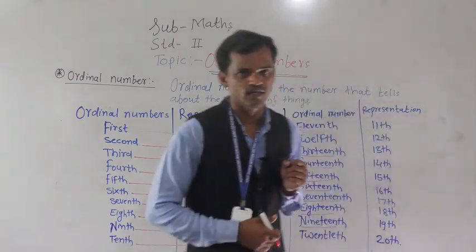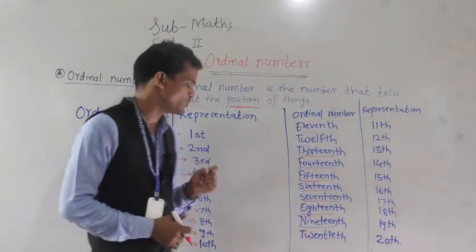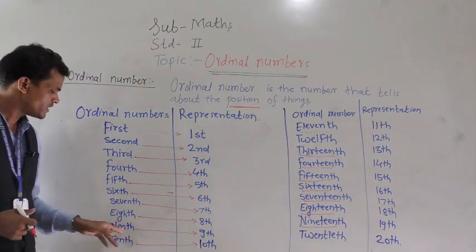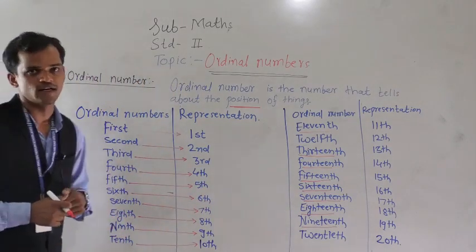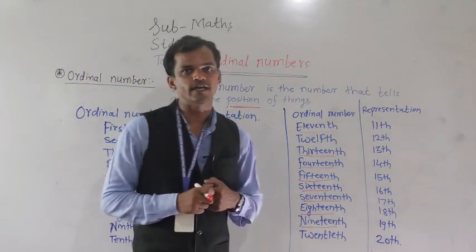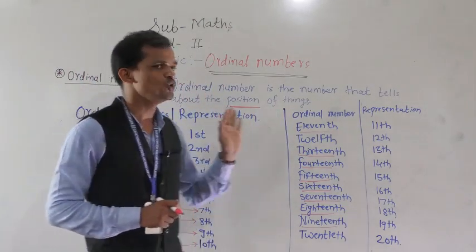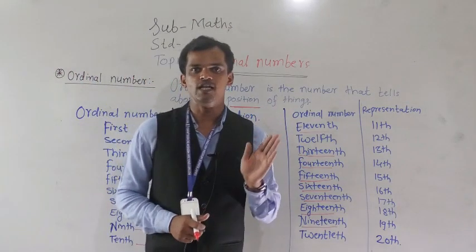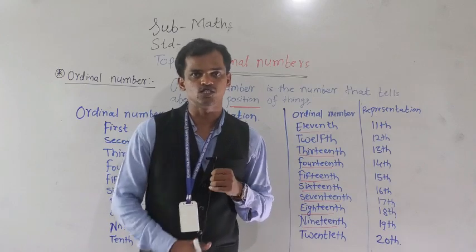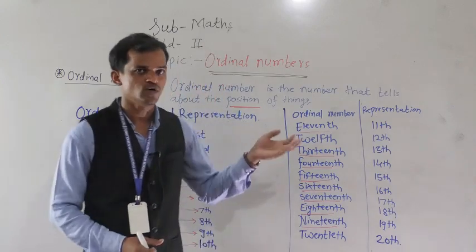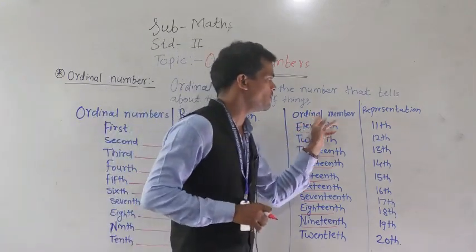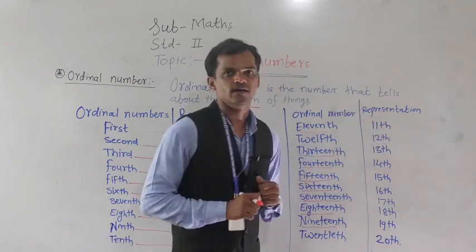One important thing — in the spelling of ninth, the 'e' doesn't come. After tenth comes eleventh. You know the spelling of eleven, twelve, thirteen, fourteen, fifteen, sixteen — it is very simple. Now we will see ordinal numbers and their representation for eleven onwards.